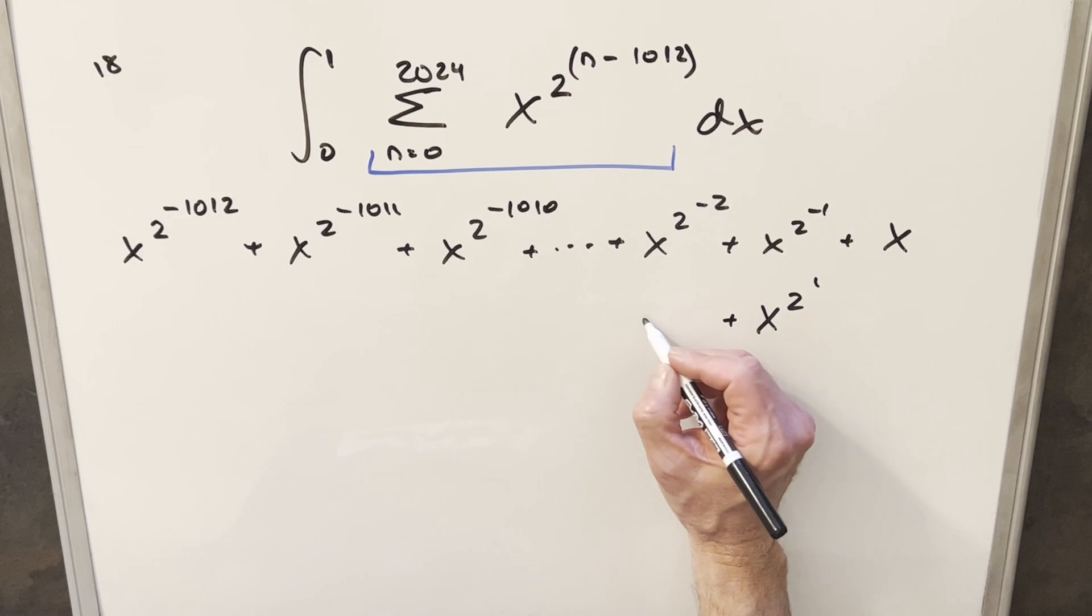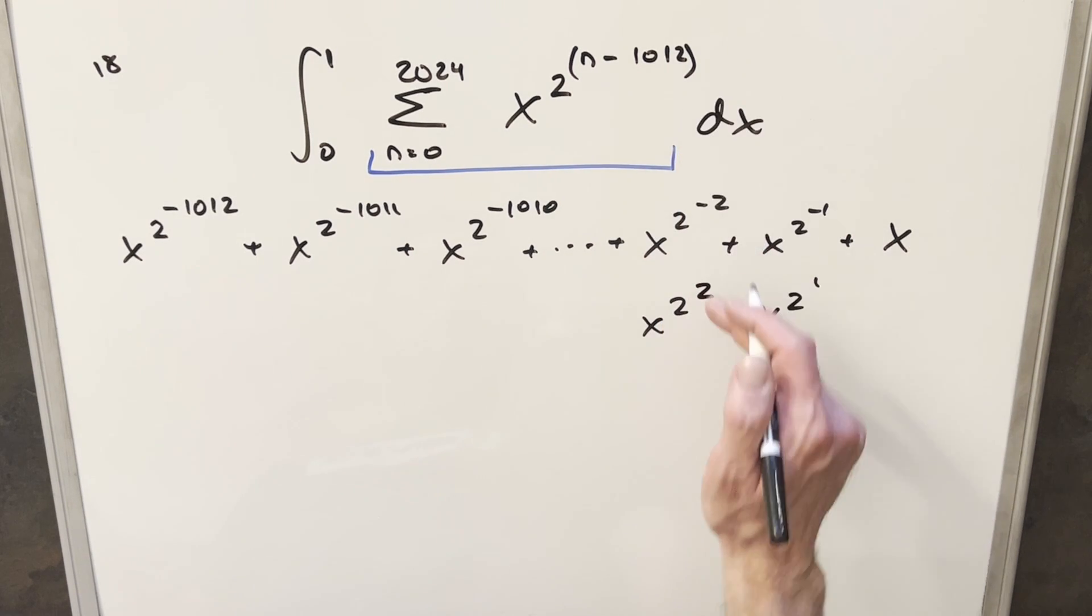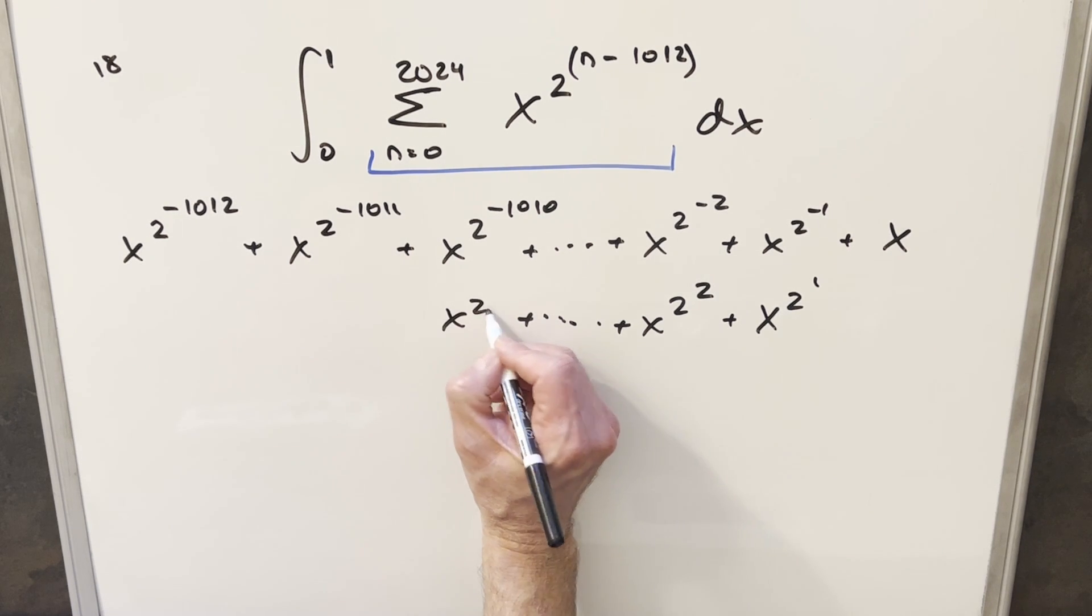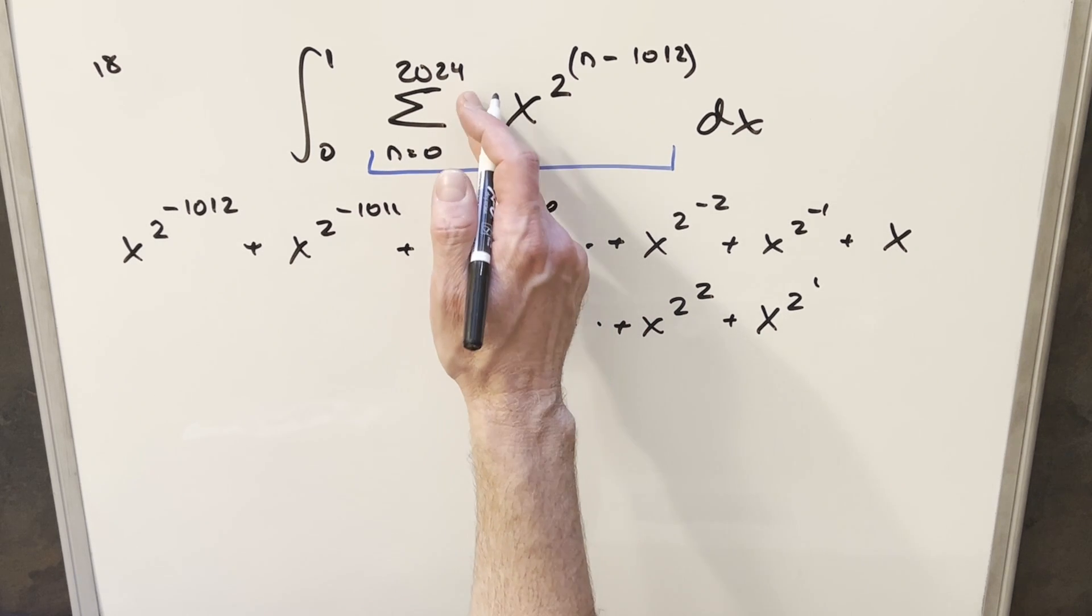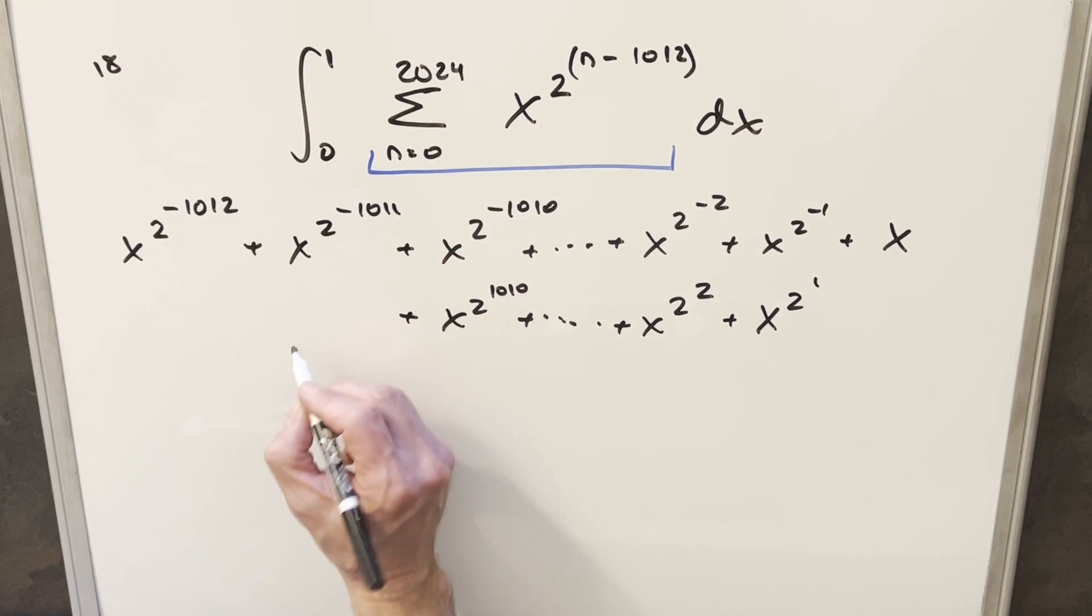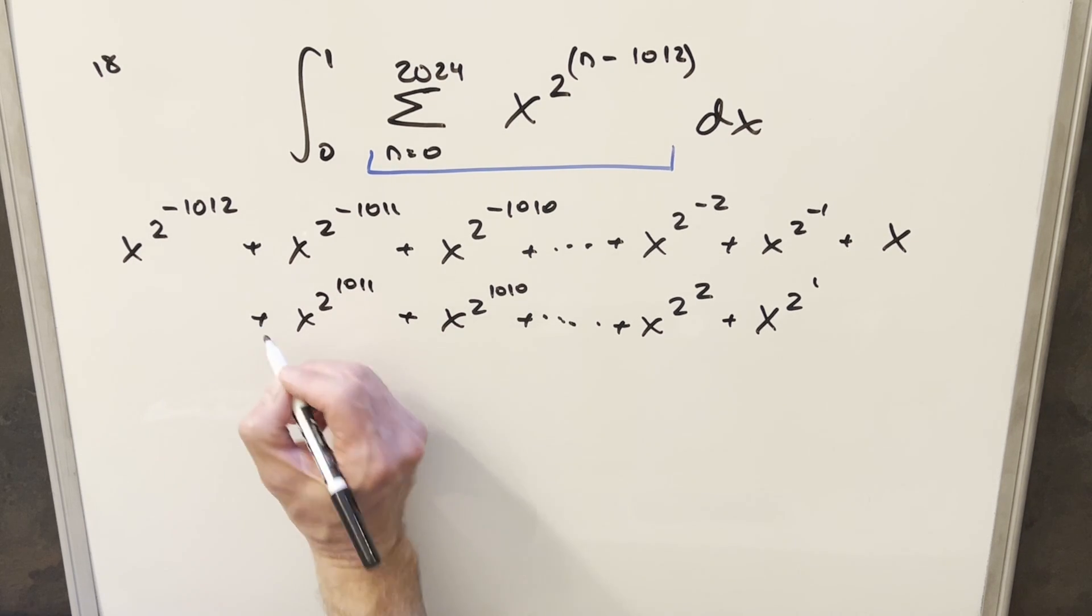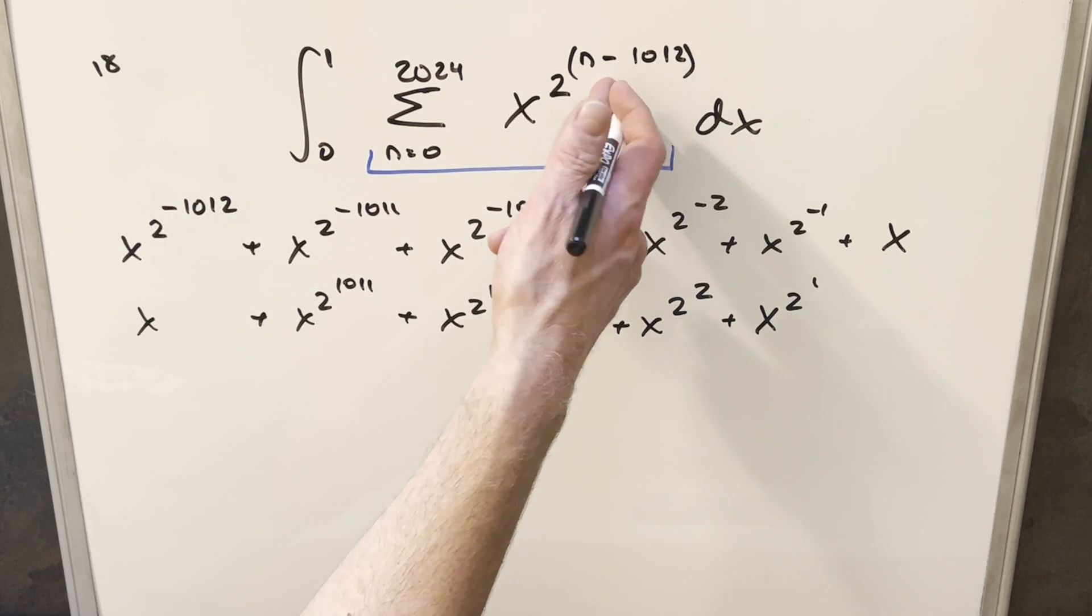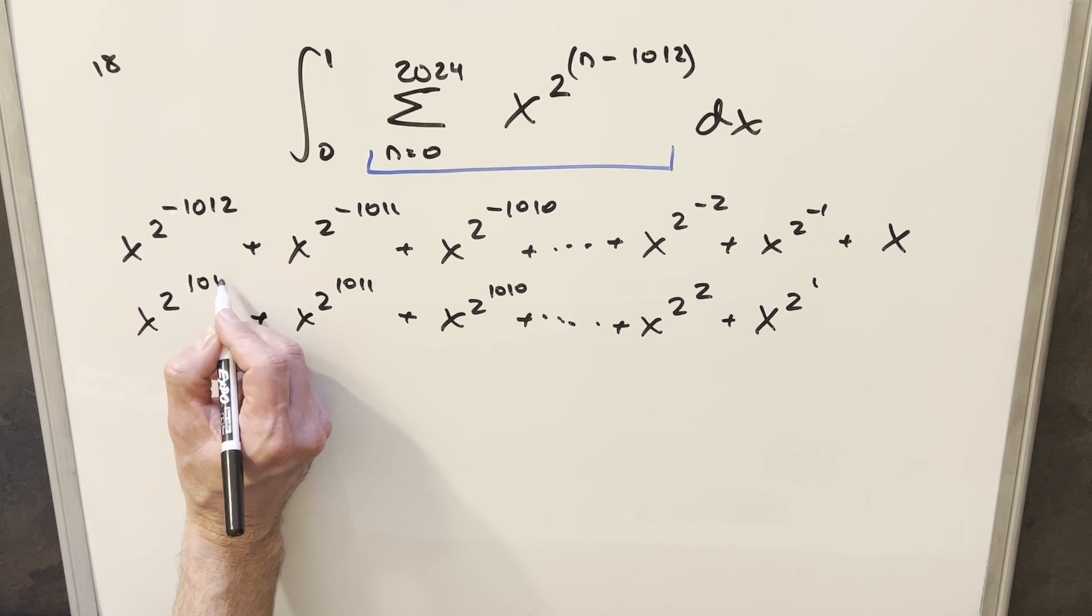Then when n is 1014, this is going to become x to the 2 to the 2. 1014 minus 1012 is just 2 there. Then this is going to go on and on. But I'll do these last three terms here. This is going to be x to the 2 to the 1010. That's going to be when n is like 2022. And then at 2023, we're going to get x to the 2 to the 1011. And then for this last one, when n is 2024, the exponent here is going to become 1012. So we have x to the 2 to the 1012.